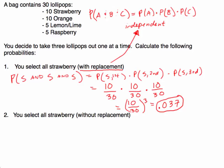Now if we want the probability of selecting all strawberry without replacement, this is going to be dependent. These events are dependent because when we take out that strawberry lollipop, for the second choice there are no longer 10 strawberry lollipops in the bag.